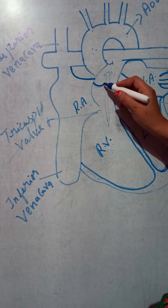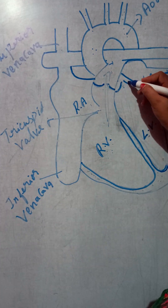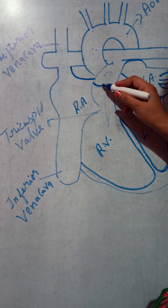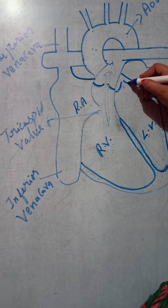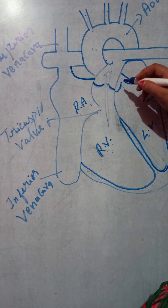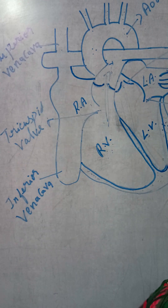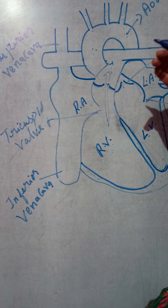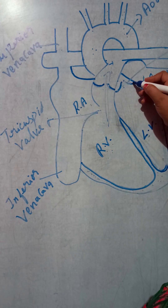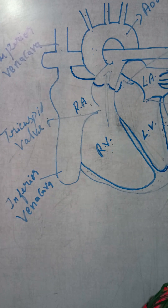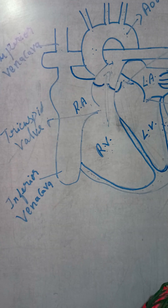Here you can see these structures — these are known as the semilunar valves. The word 'lunar' means moon and 'semi' means half, so these structures look like a half moon. That's why we call them semilunar valves.